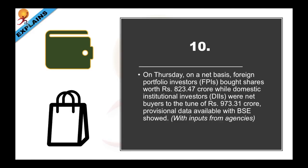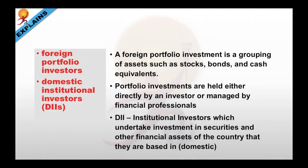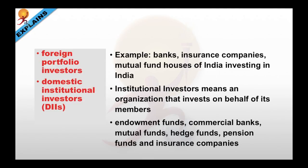On Thursday, on a net basis, foreign portfolio investors bought shares worth Rs. 823.47 crore, while domestic institutional investors were net buyers to the tune of Rs. 973.31 crore. A portfolio investment is a grouping of assets such as stocks, bonds and cash equivalents, held either directly by an investor or managed by financial professionals. When the word 'foreign' is used as a prefix, it means the origin of the money is from a foreign land. Domestic institutional investors or DIIs undertake investment in securities and financial assets of the country they are based in. Examples include banks, insurance companies and mutual funds investing within India.